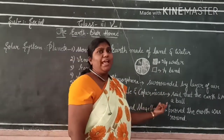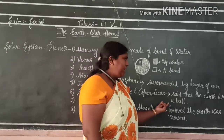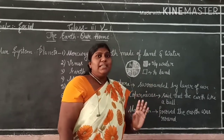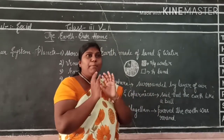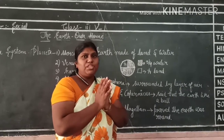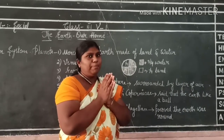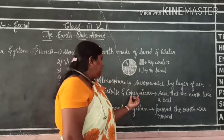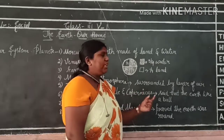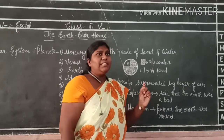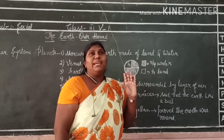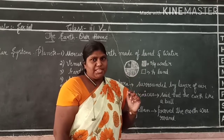Later, people like Aristotle and Copernicus said that the Earth was like a ball — a rounded shape. Copernicus and Aristotle said that the Earth is like a ball without edges.